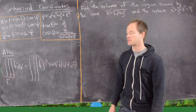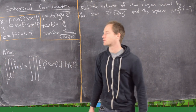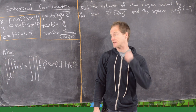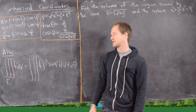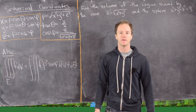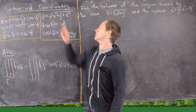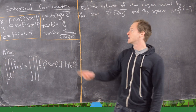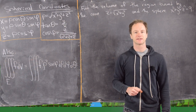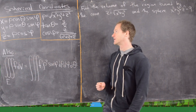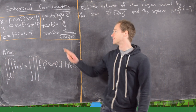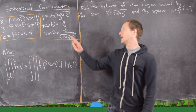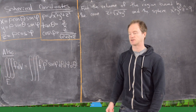Now we've got our change of variables all worked out. So we have x = ρ·cosθ·sinφ, y = ρ·sinθ·sinφ, and z = ρ·cosφ. If you want to go in the other direction: ρ = √(x² + y² + z²), tanθ = y/x (in other words θ = arctan(y/x)), and cosφ = z/√(x² + y² + z²) (in other words φ = arccos of that term).